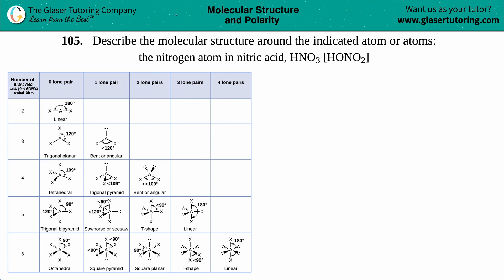Number 105, describe the molecular structure around the indicated atom or atoms, and then we want to find out that molecular structure for the nitrogen atom in nitric acid, which is HNO3, or also written as HONO2.